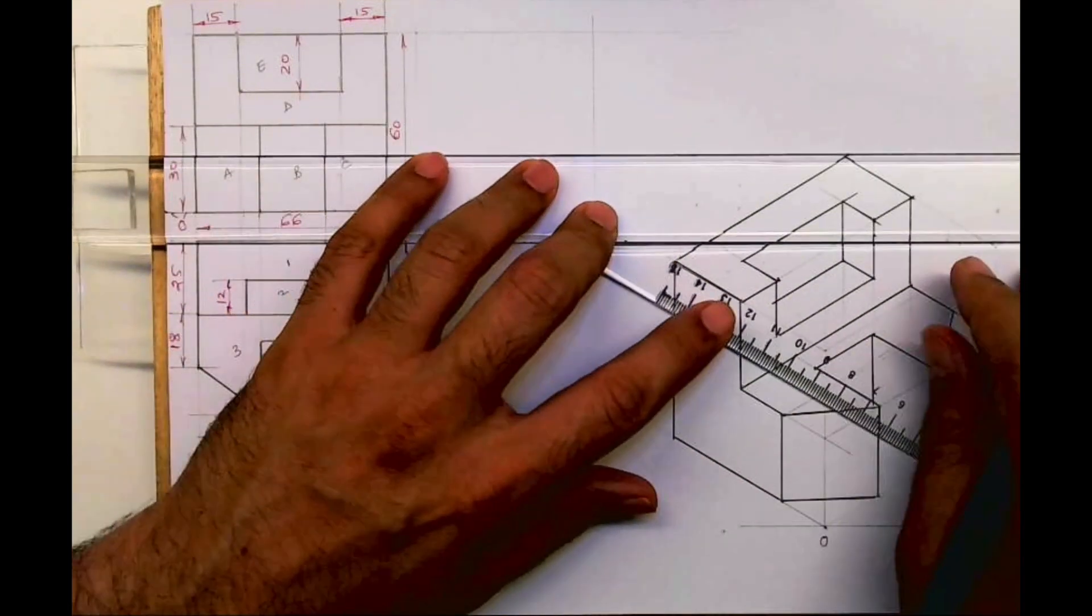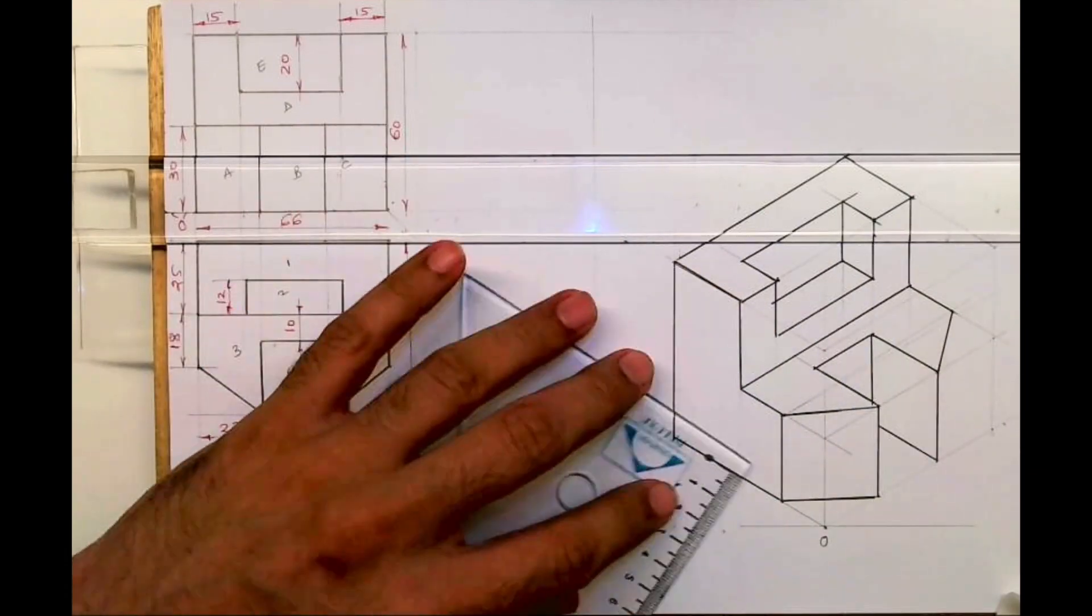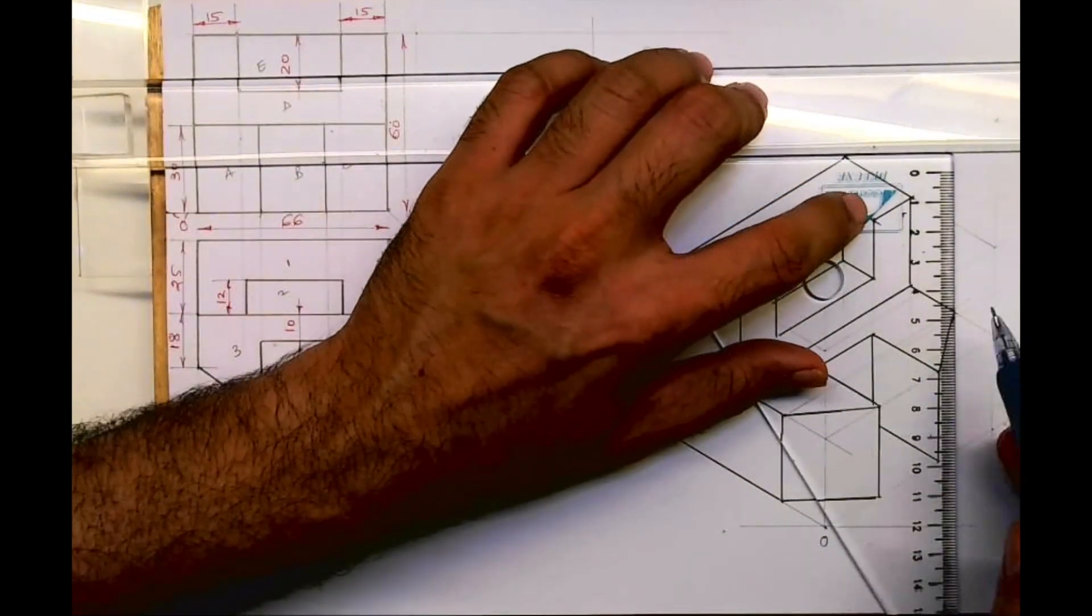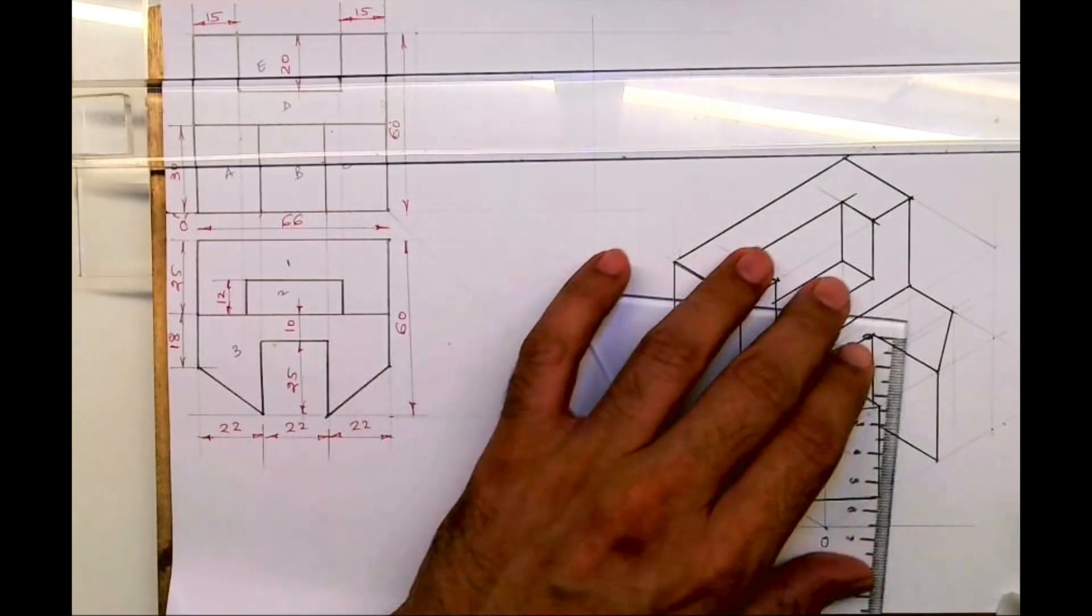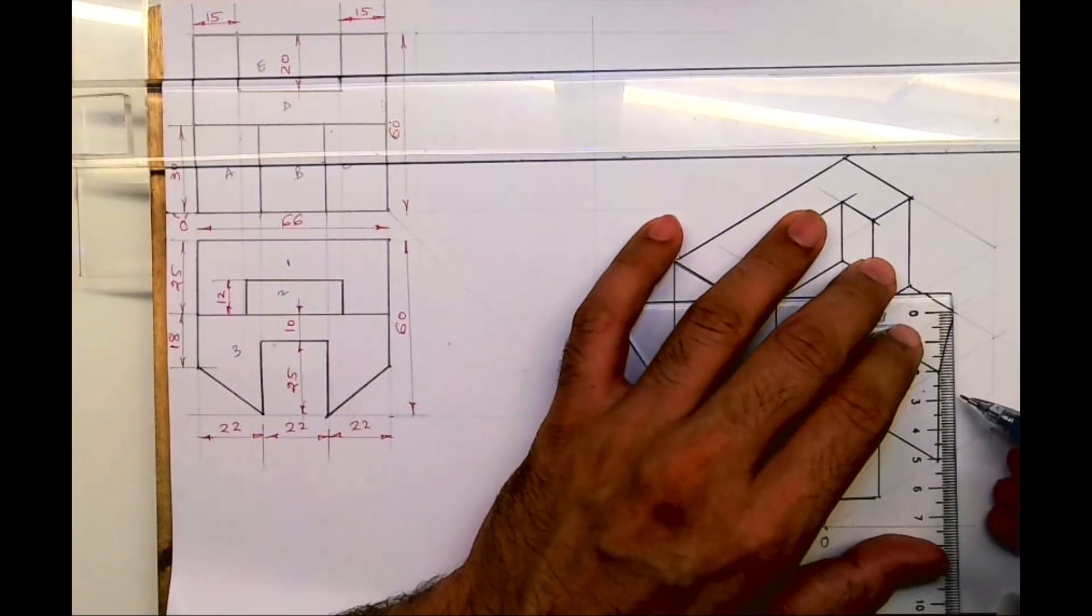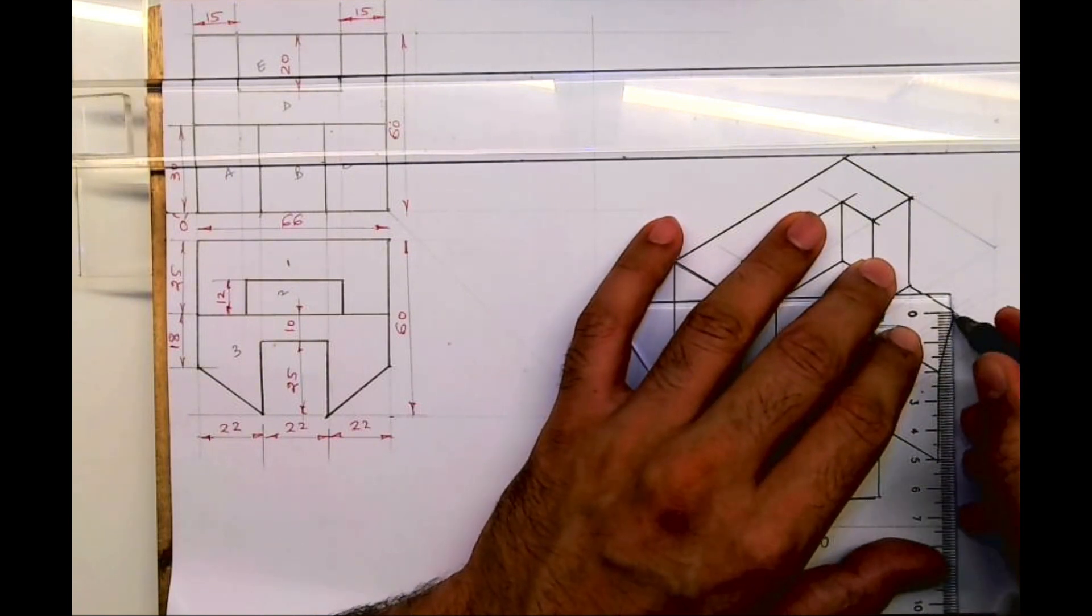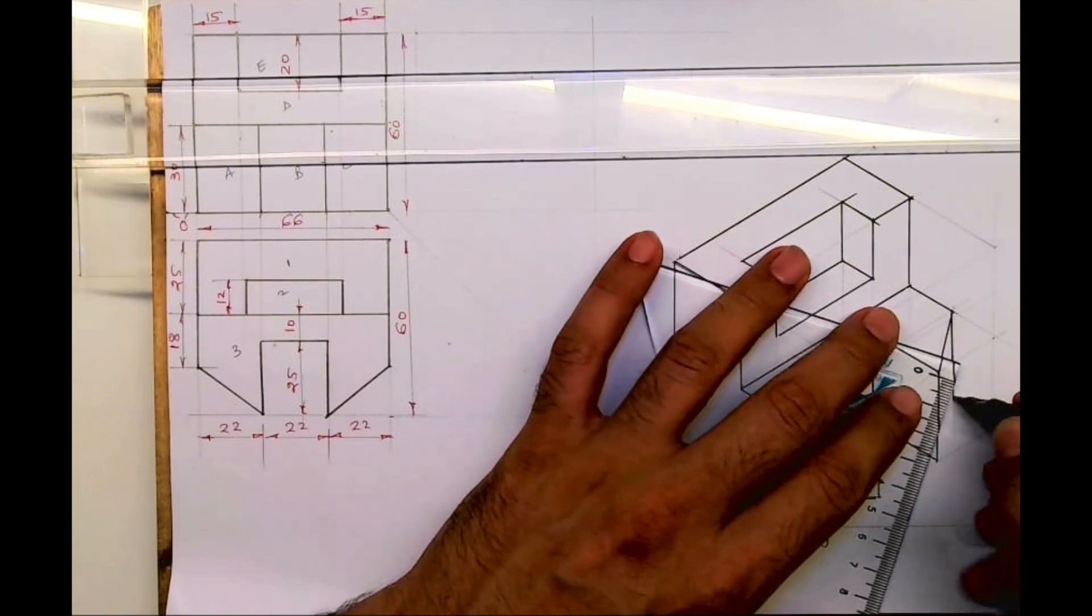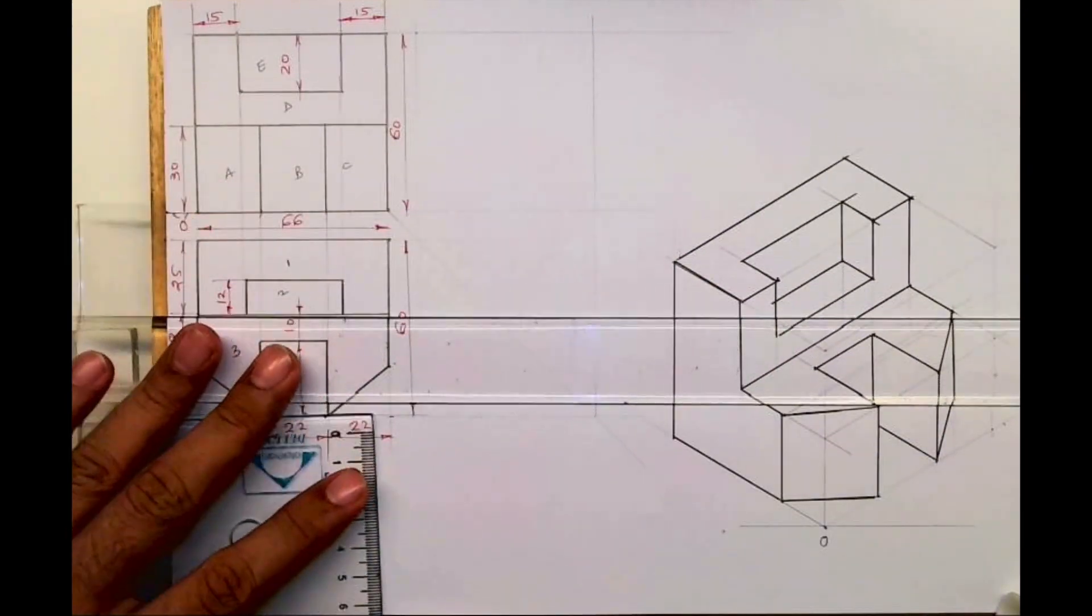The same way I can take this line down by 30 and extend the line from here. From here also I'll go down by 30, so now we are done with isometric.